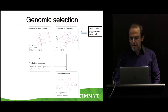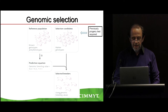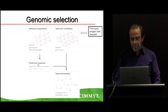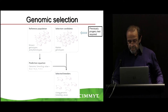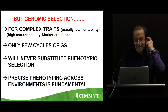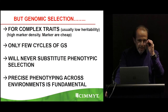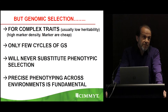In traditional breeding, we do a progeny test because we want to see how the candidates perform. In genomic selection, we develop a prediction equation based on phenotypes and markers, predict the breeding value, and then select the animals or plants with the highest breeding value. It looks very simple, but it's not.